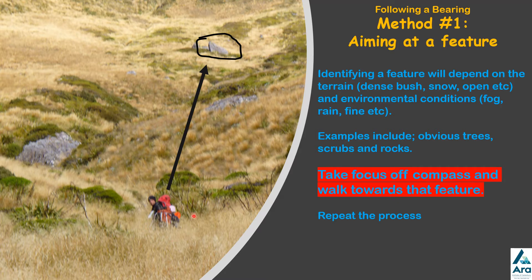So you can put the compass down and take the focus off the compass, then just walk towards the best way to get to that feature. And then you just repeat the process — once you're at that rock, you look ahead on the same bearing: where is it going to take me, where's the next feature I need to walk towards. This is the aiming at a feature method.